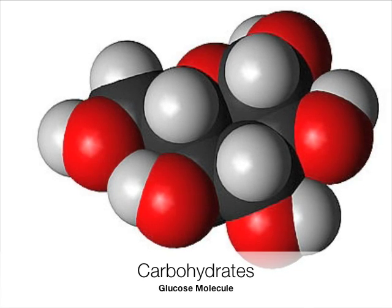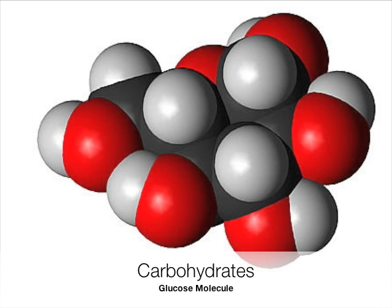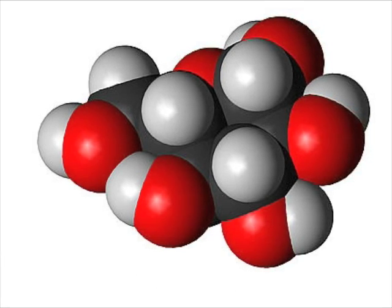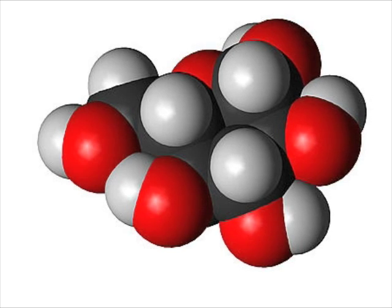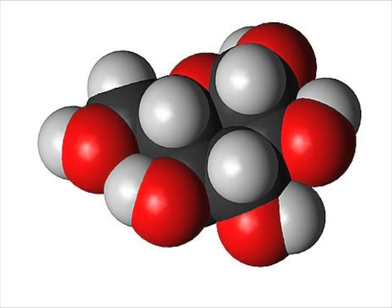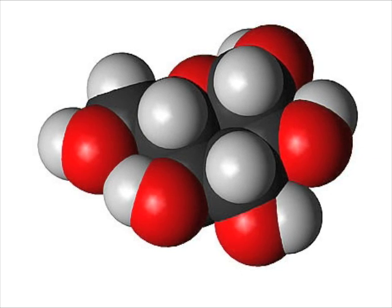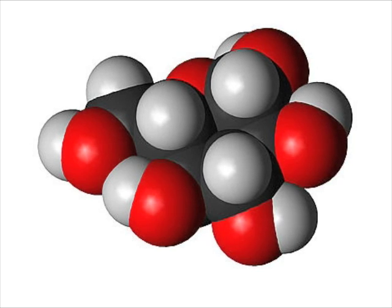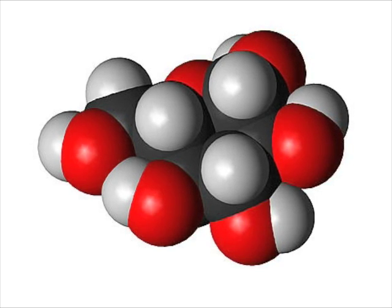Carbohydrates, such as this glucose molecule, are the optimum energy molecules in biological systems, such as you. They have a ratio of carbon, hydrogen, and oxygen atoms of 1 to 2 to 1. Glucose has 6 carbon, 12 hydrogen, and 6 oxygen atoms. Divide that by 6, and you get 1 to 2 to 1 of each.